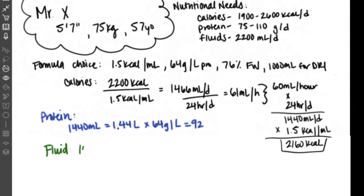Finally, we'll move on to fluid. We have 1,440 milliliters a day, and we are going to multiply that by 0.76 because our formula is 76% free water. That gives us 1,094 milliliters of free water. We calculated Mr. X's fluid needs to be about 2,200 milliliters a day. So we need to give him some extra water in the form of water flushes. To figure out how much water flushes he needs, we're going to take 2,200 and subtract this 1,094 milliliters. That gives us 1,106 milliliters that we need to give him in flushes.